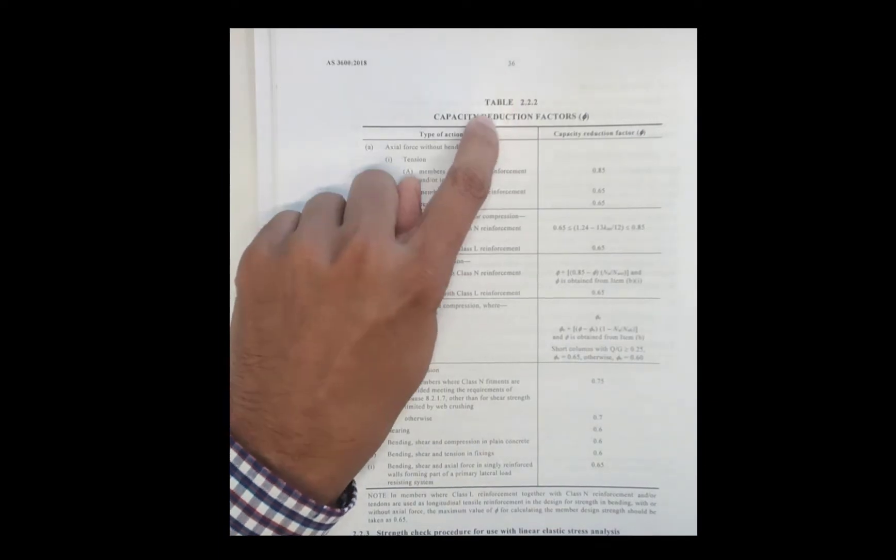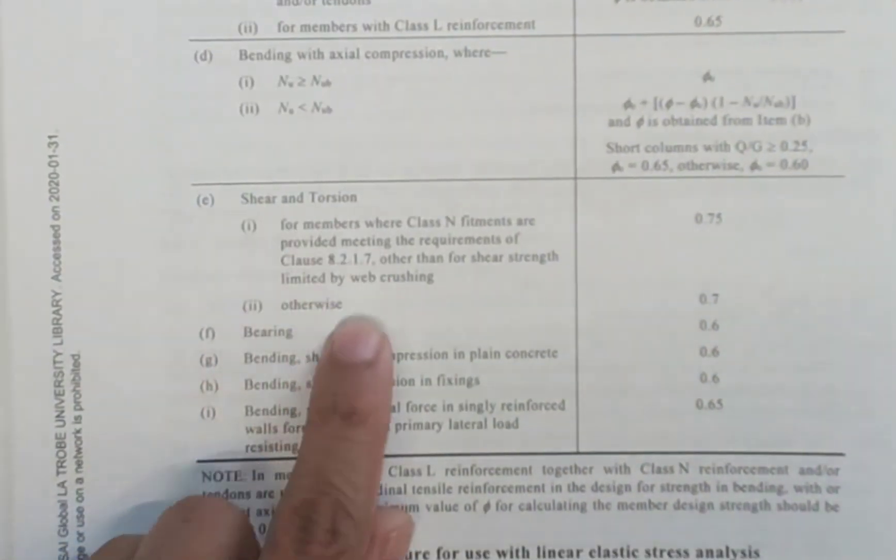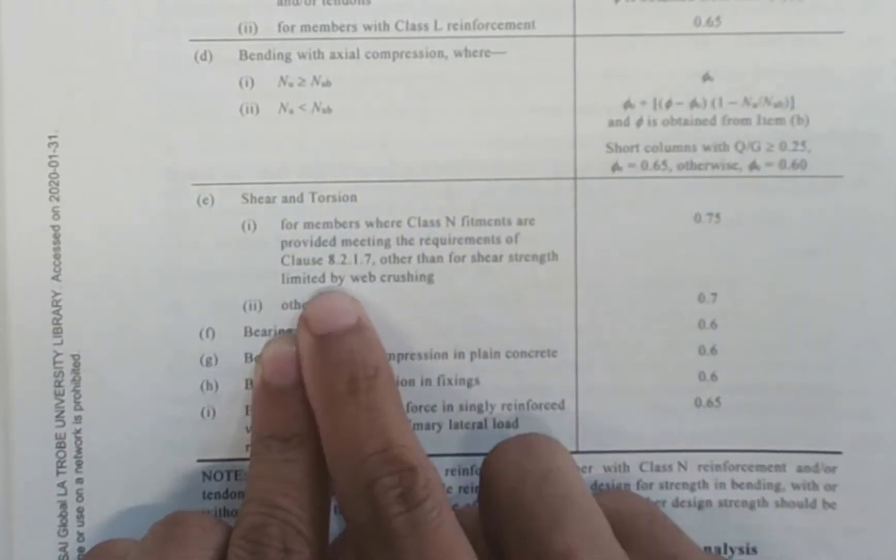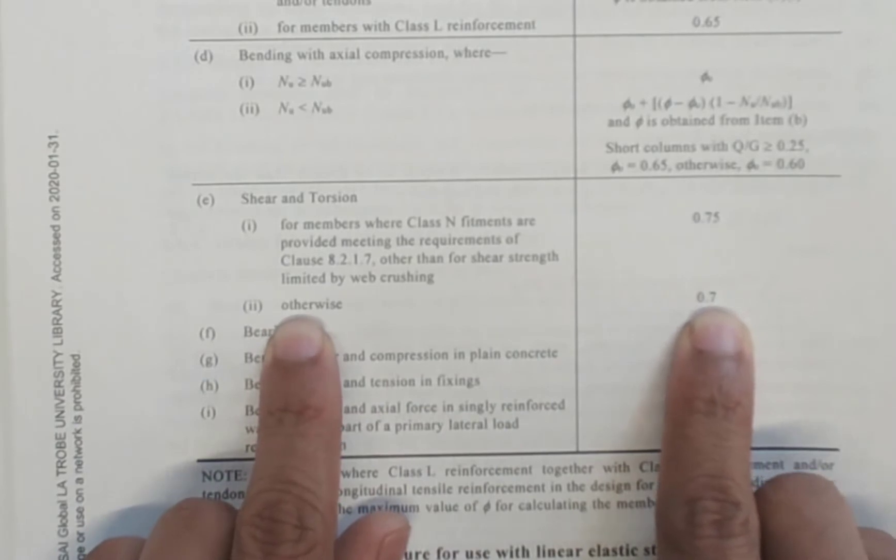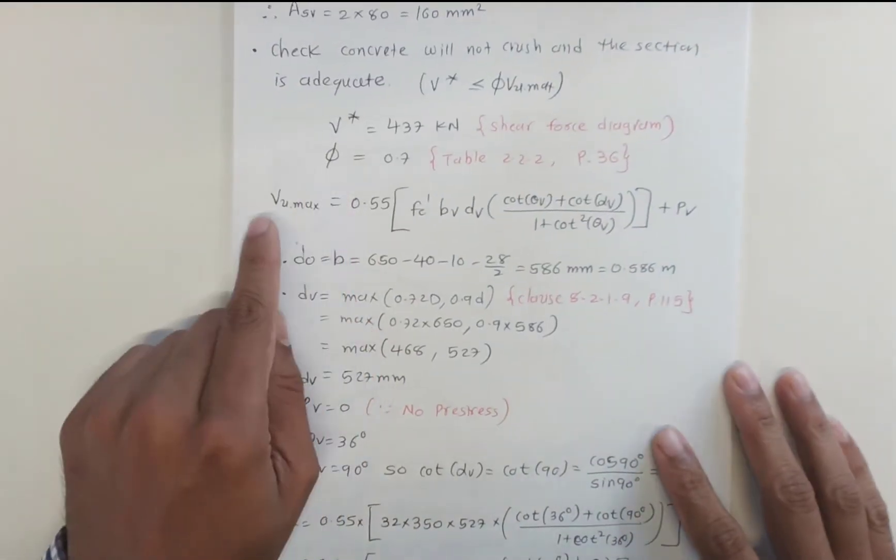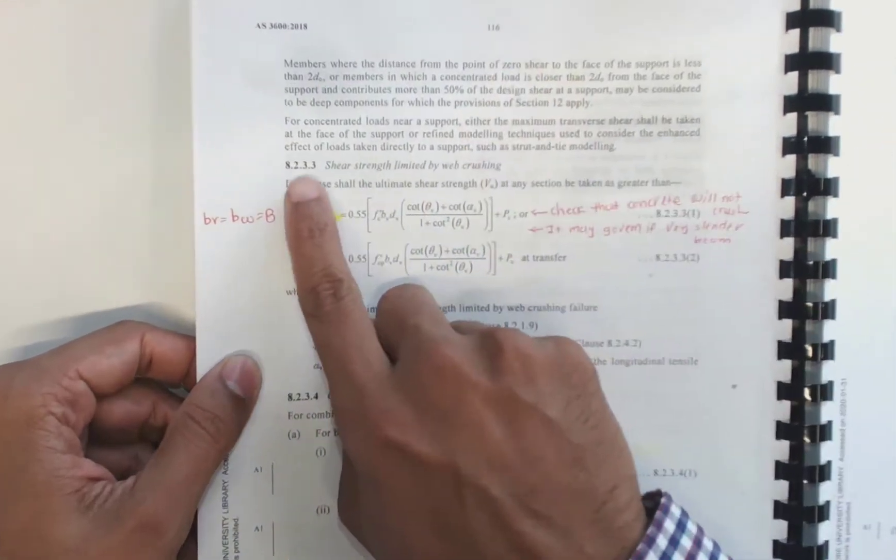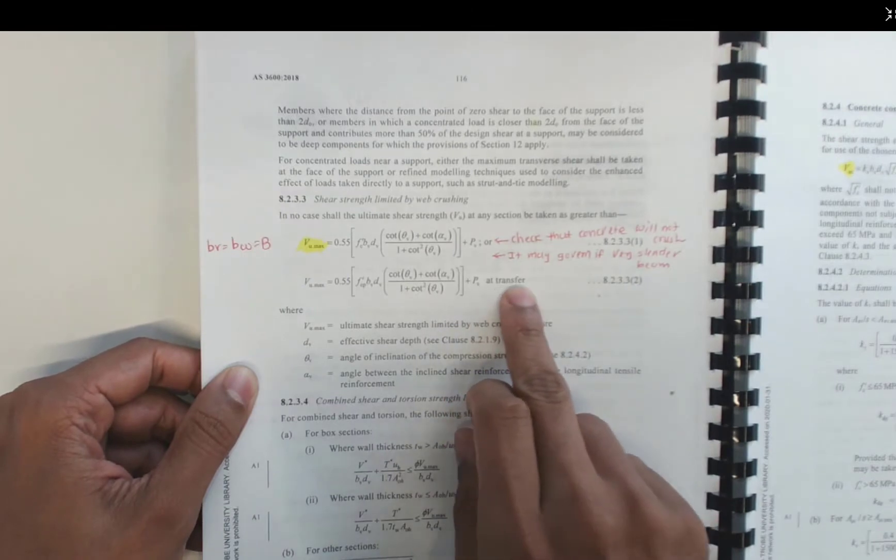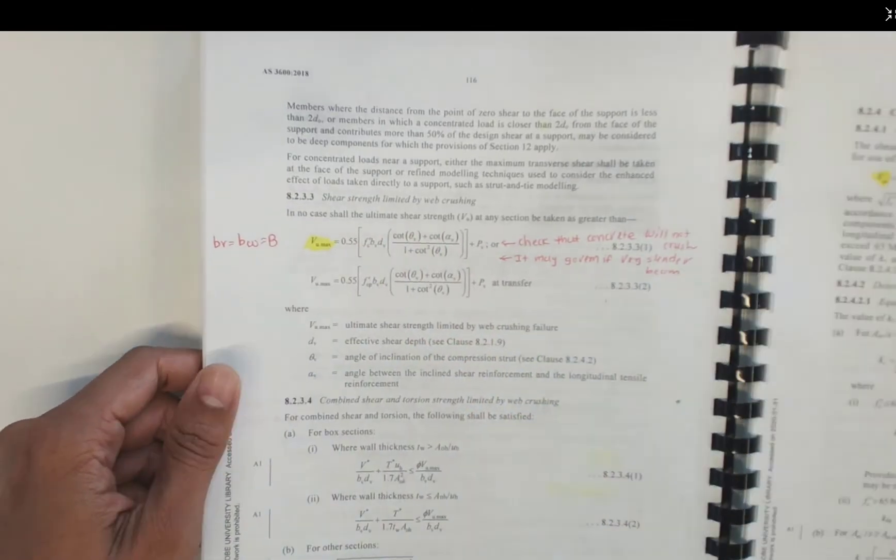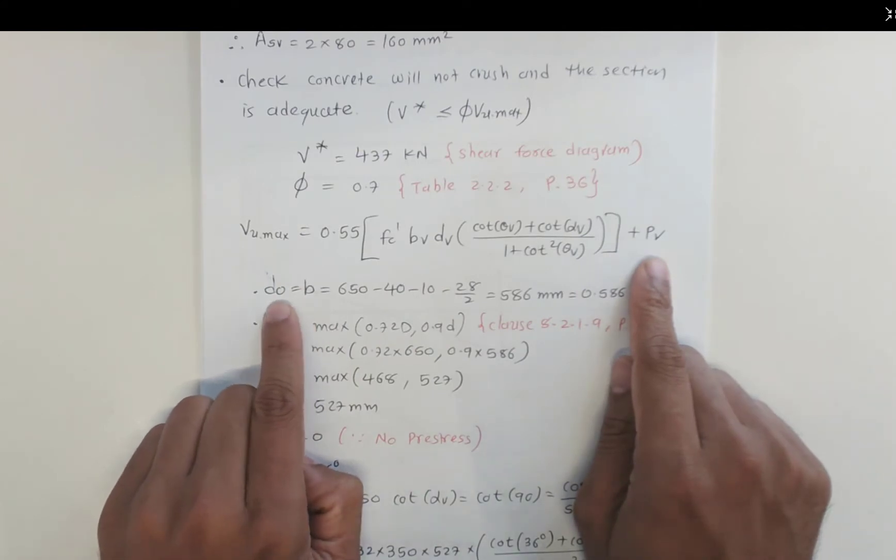On page 36, Table 2.2.2 gives capacity reduction factors. We are working with shear, so go to section E, which covers class N fitments. For R fitments, we take φ equal to 0.7. VU maximum - the Australian Standard provides the equation on page 116, clause 8.2.3.3, to calculate shear strength. We are not at transfer, so we use this VU maximum equation, which is 0.55 times the expression shown.